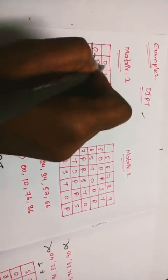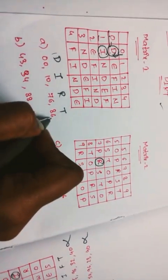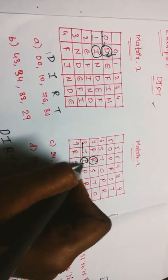Checking option A for 'DIRT': 0,0 — D is satisfied. 1,0 — I is satisfied. 7,6 — R is satisfied. 8,6 — checking for T: at column 8, row 6, the letter found is O, not T. So T is not satisfied. Therefore option A is wrong.